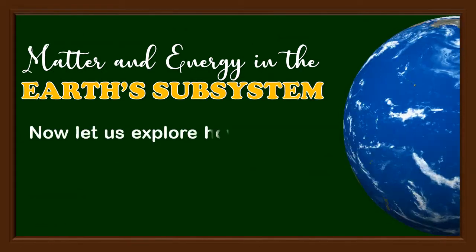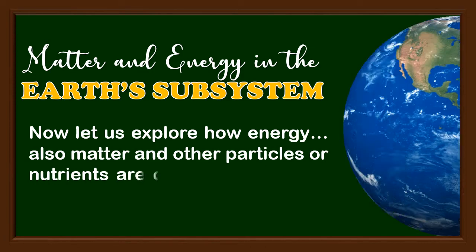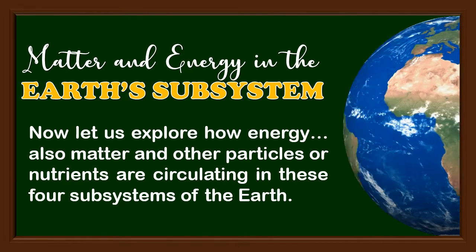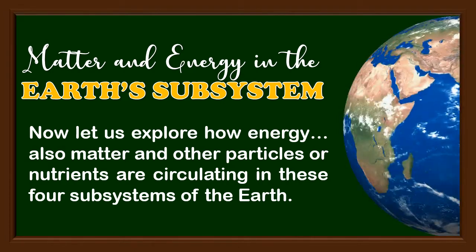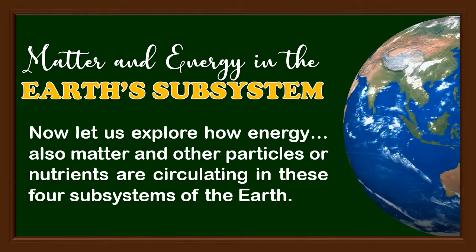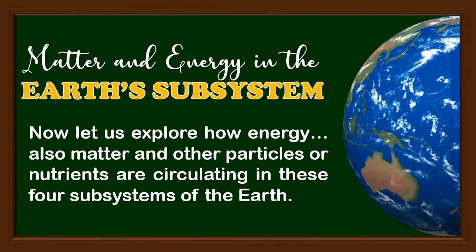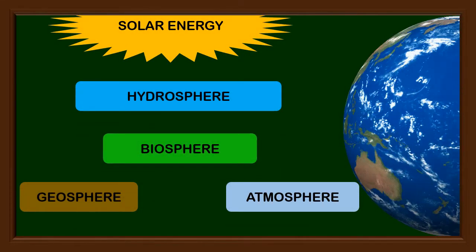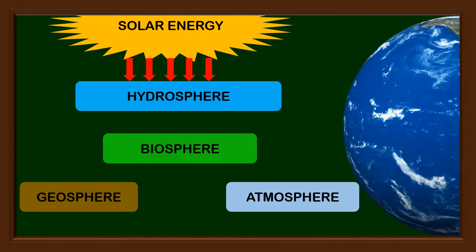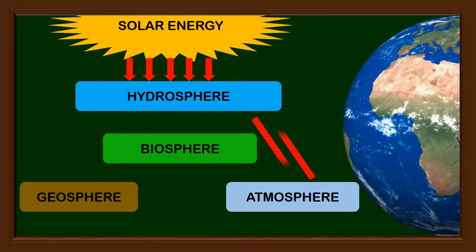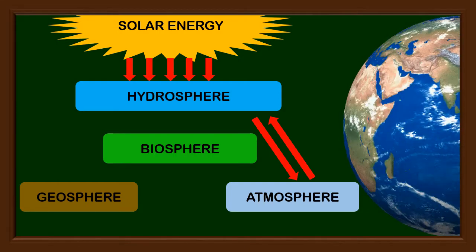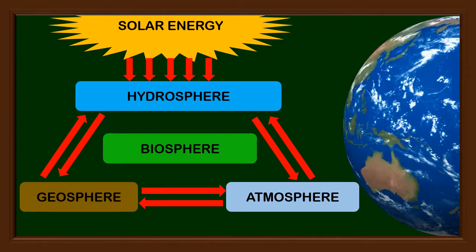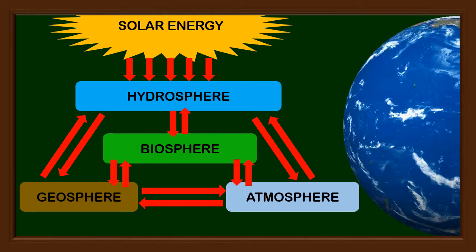Now let us explore how energy, matter, and other particles or nutrients are circulating in these four subsystems of the Earth. In this diagram, we can perceive that the substances or nutrients are actually connected to one another. The flow of matter and energy are interconnected within the system. The atmosphere is connected to the hydrosphere, and they have mutual connections. Likewise, the hydrosphere connects to the geosphere, and the geosphere to the atmosphere. All the aforementioned subsystems are connected to the biosphere.